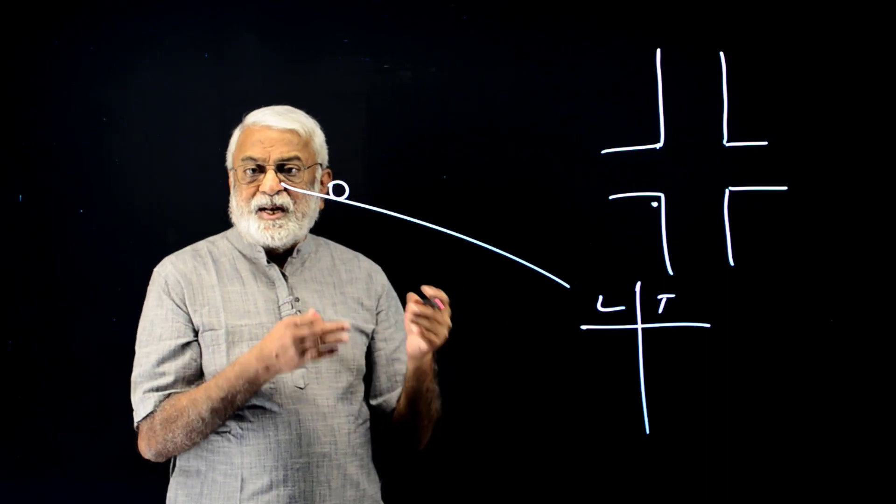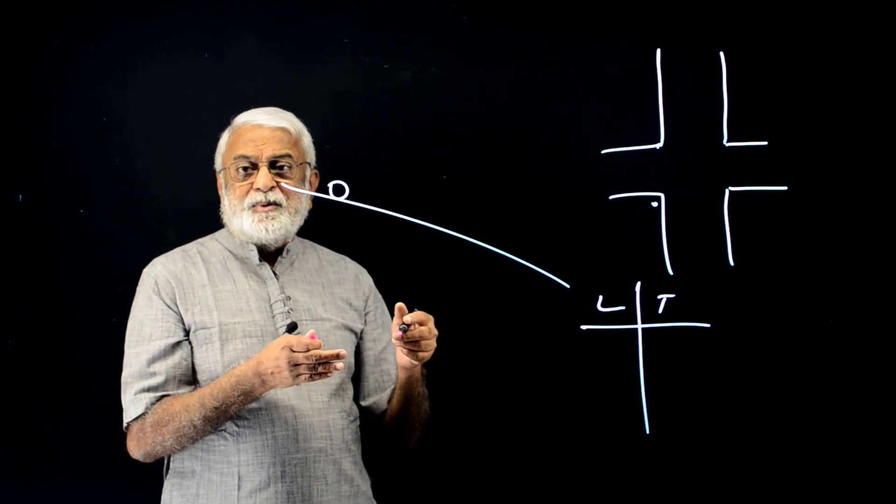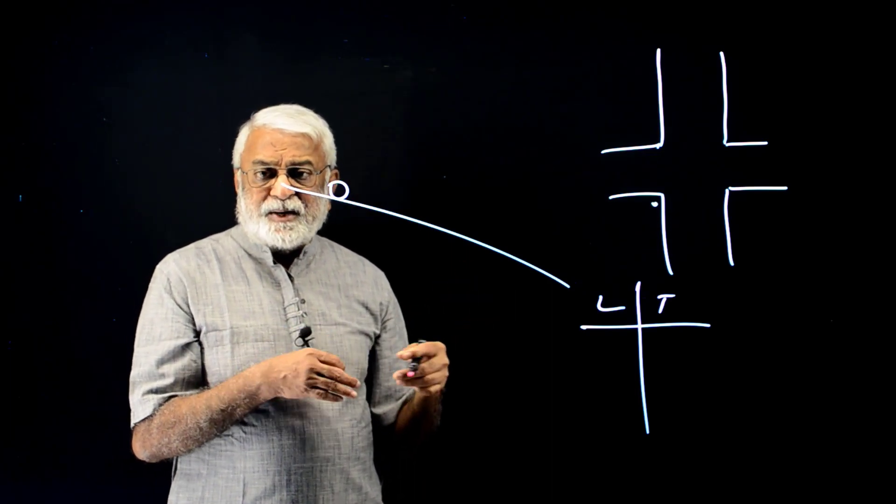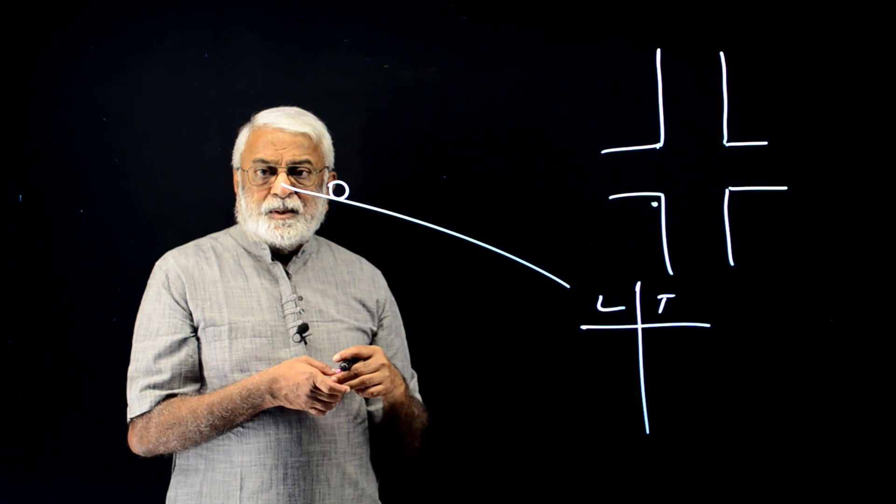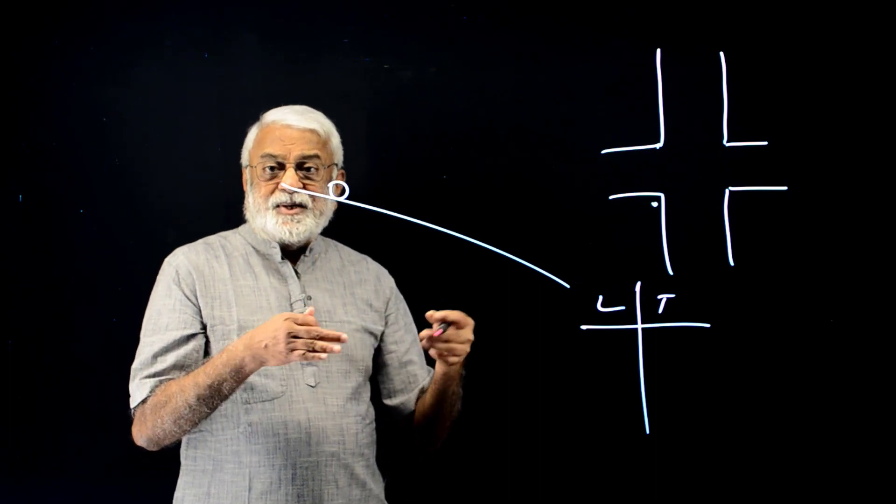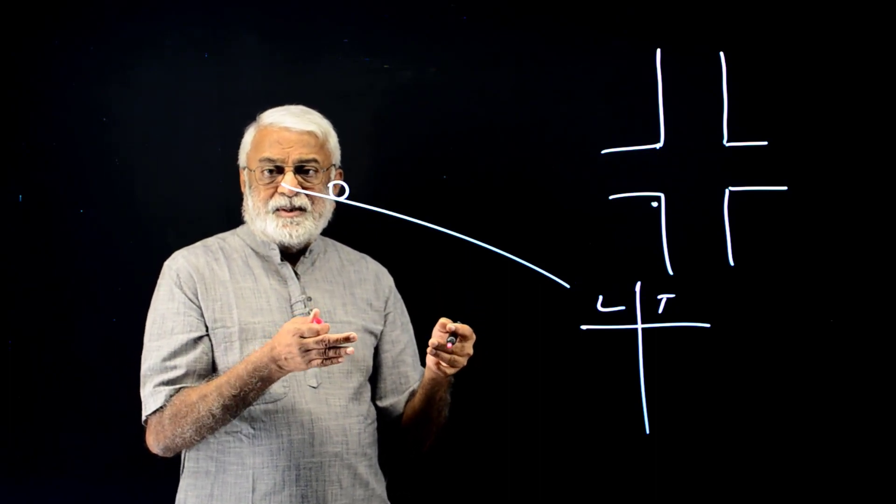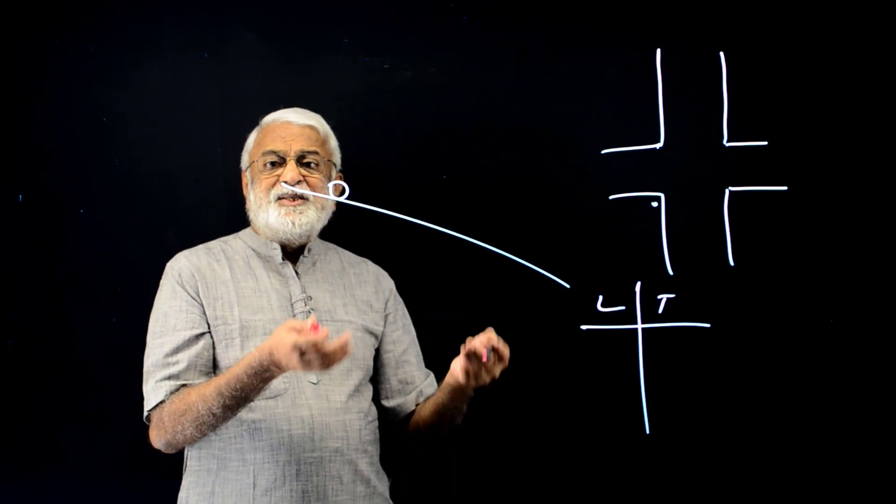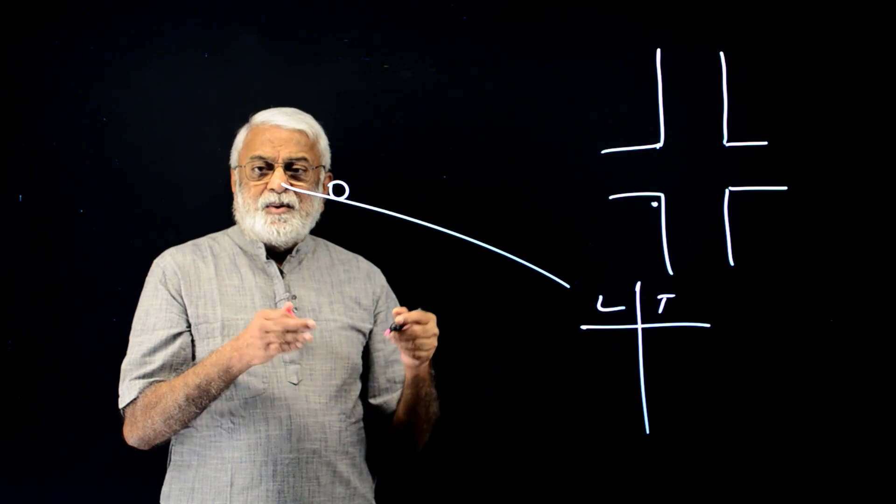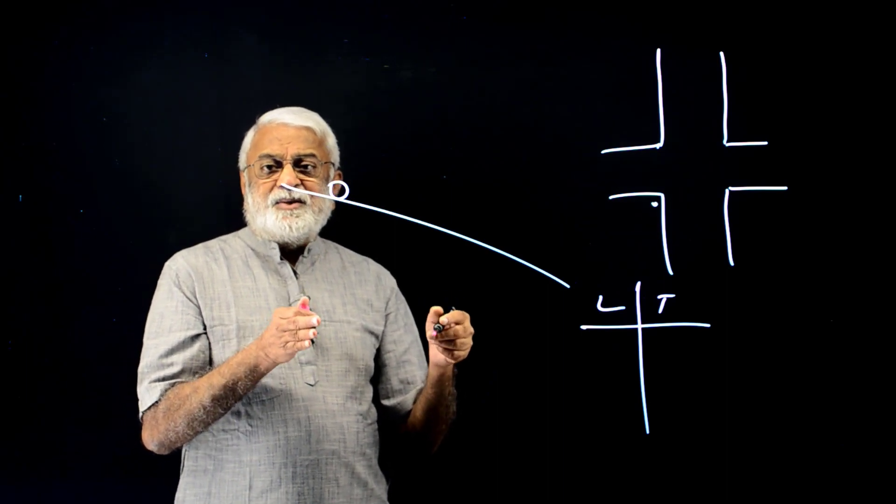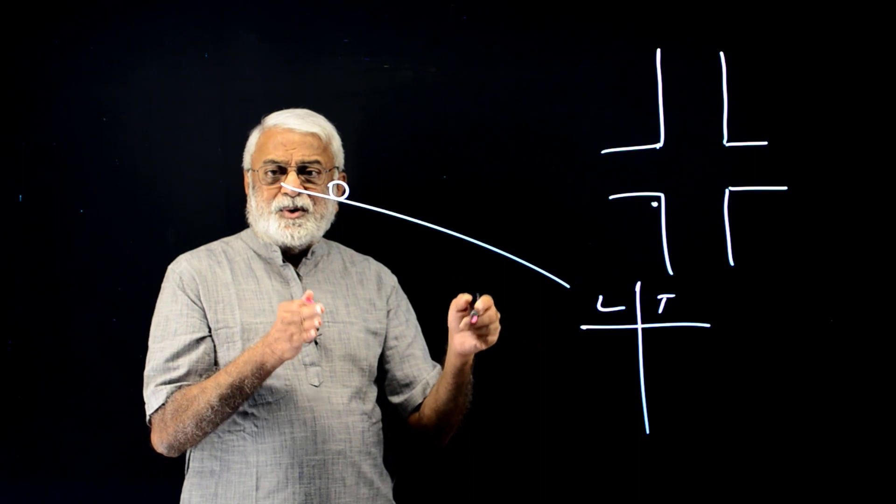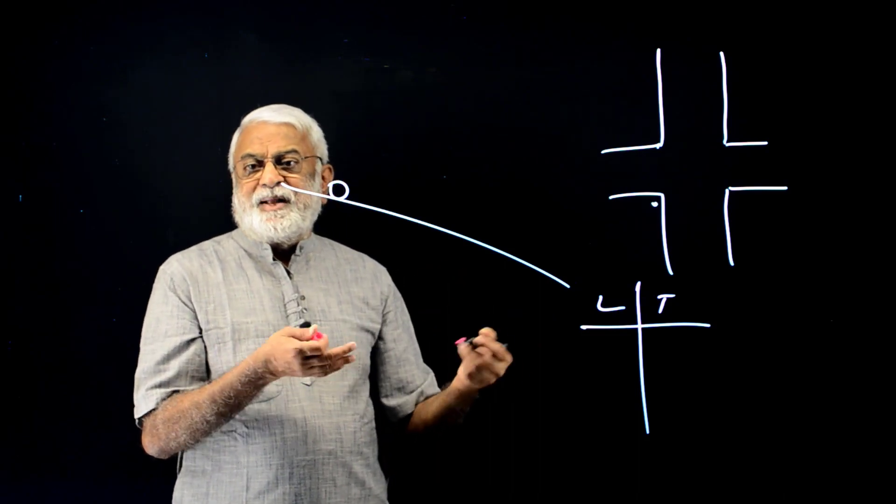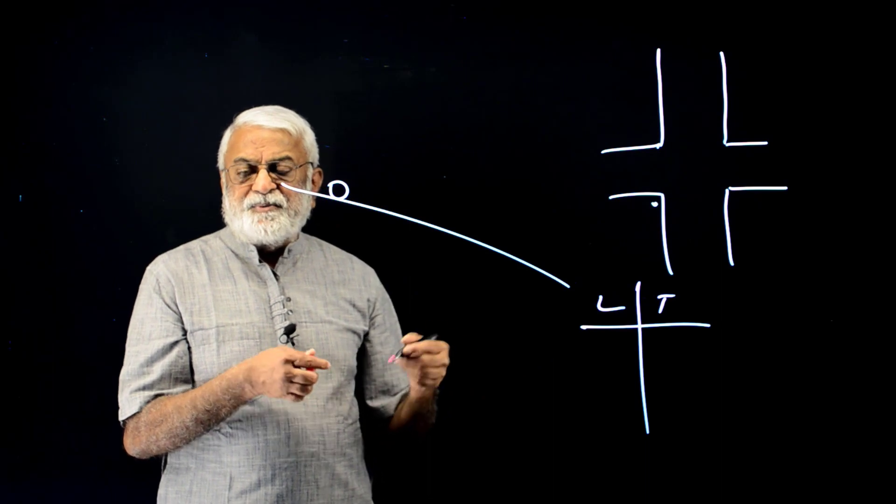For example, Newton did not know what light is. He assumed that light is a stream of corpuscles. That guess went bad as we all know. But then even the greatest scientist of the time, his guess went bad. So we do not know, so we guess. And we follow the consequence of the guess. The consequences of the guesses were like light corpuscles travel along straight lines. And so reflection and refraction were nicely explained. But there were other phenomena which were observed later. And Newton's corpuscle theory fails to explain them.